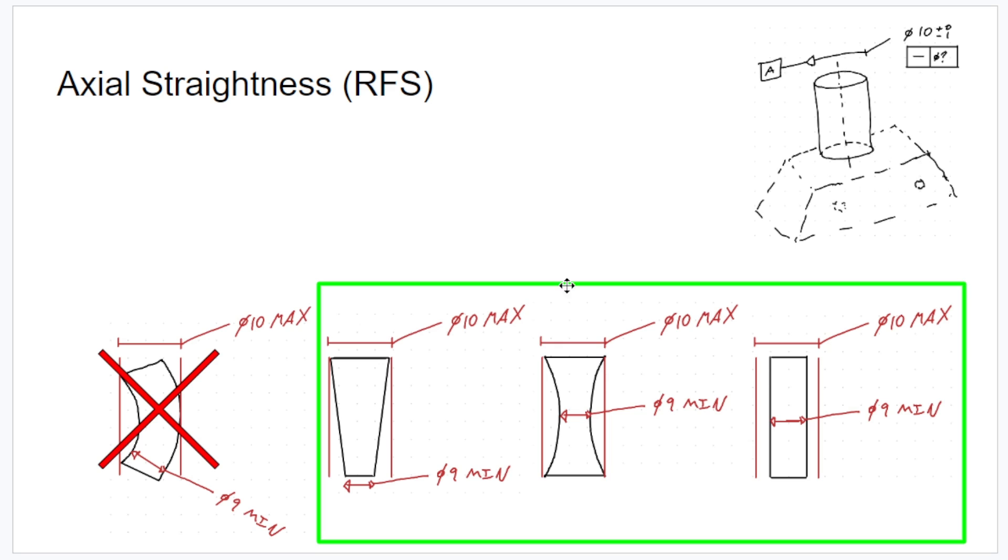And now axial straightness RFS. So although it's not necessarily useful for a rotating part or reciprocating part that's really close to another part due to the sharp edges, and it's not great for just locating a stationary part because it's more restrictive than rule number one.